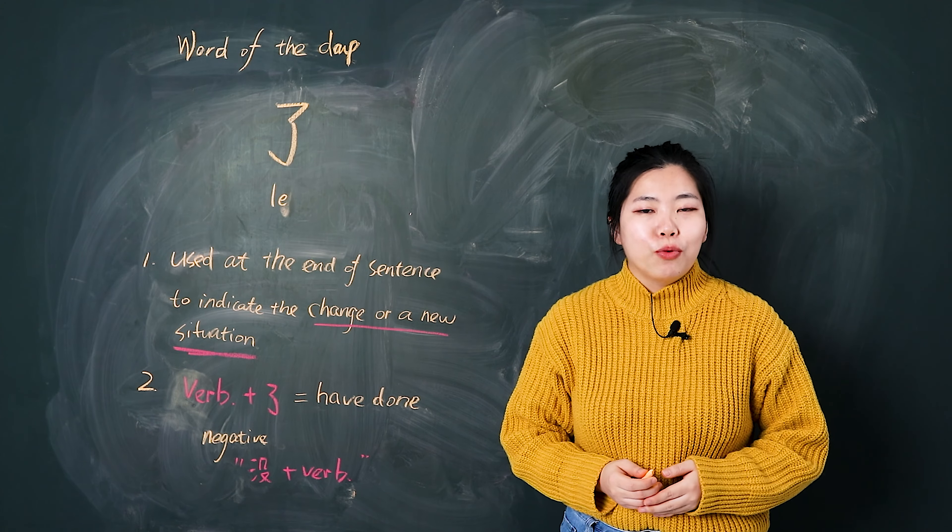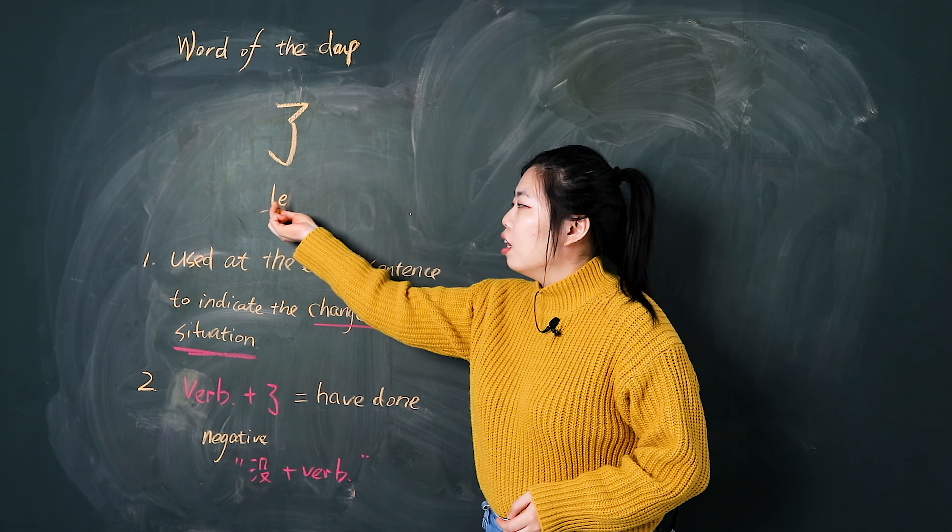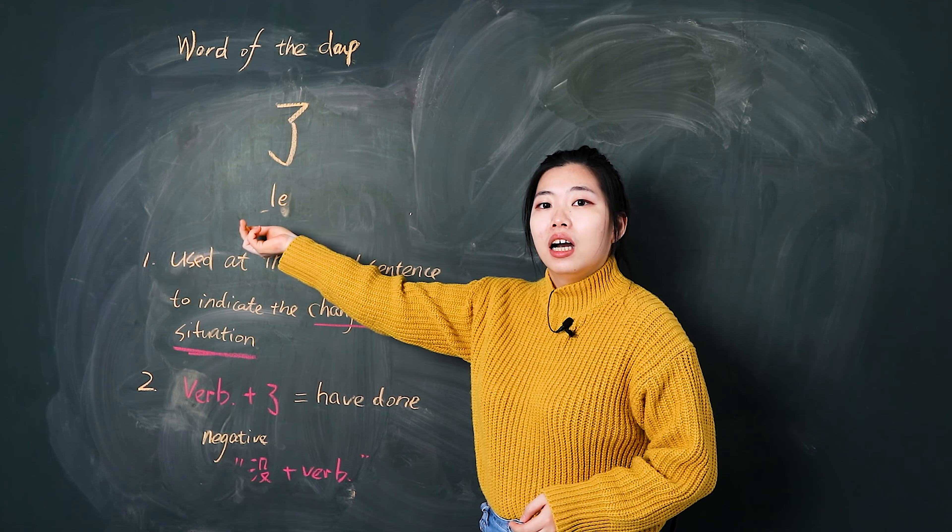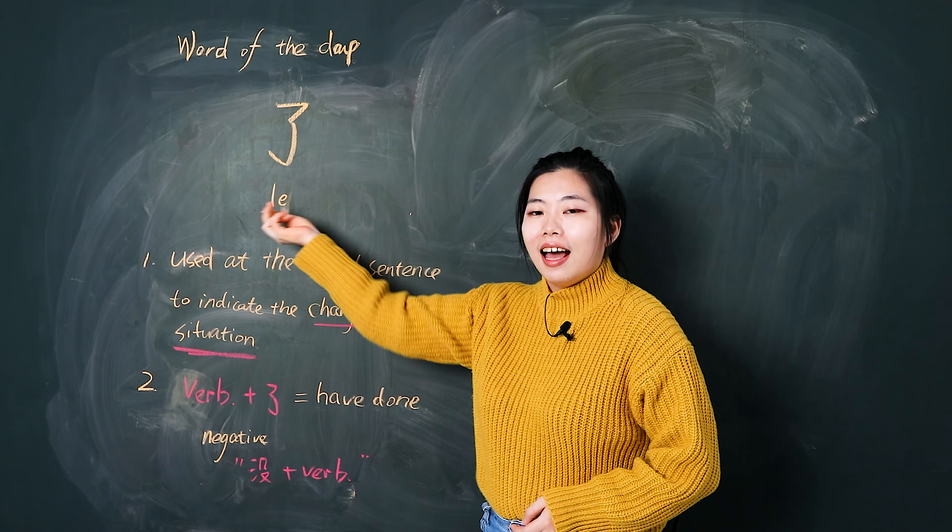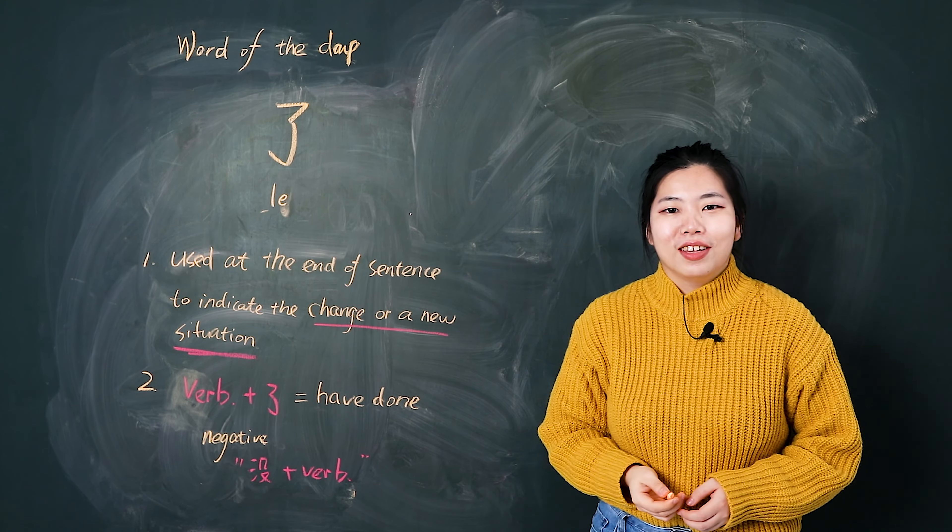First, let's read together. 我们一起读. 了. 额 了. 了. Light and short. 了. Very good.